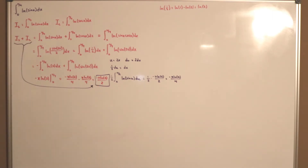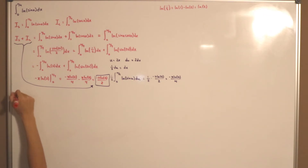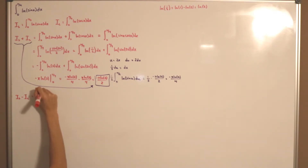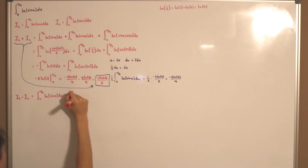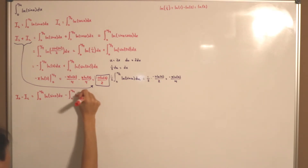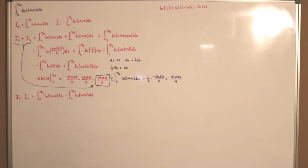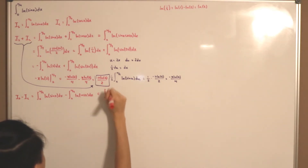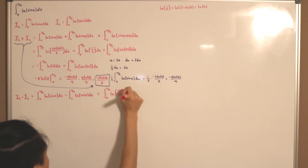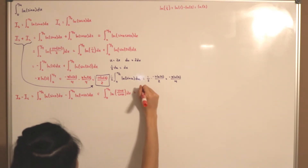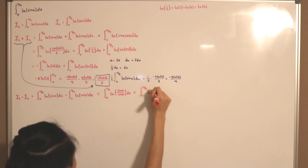Now the next thing we're going to do is calculate the difference: I(s) minus I(c). That equals the integral from 0 to π/4 of ln(sin x) dx minus the integral from 0 to π/4 of ln(cos x) dx. Using our rules for natural logs, subtracting logs gives division inside the log: the integral from 0 to π/4 of ln(sin x / cos x) dx. Using our trig rules, this is simply the integral from 0 to π/4 of ln(tan x) dx.